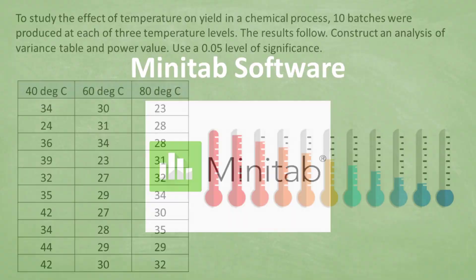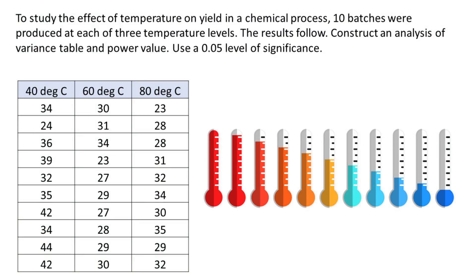To study the effect of temperature on yield in a chemical process, 10 batches were produced at each of 3 temperature levels. The results follow. Construct an analysis of variance table and power value. Use a 0.05 level of significance.